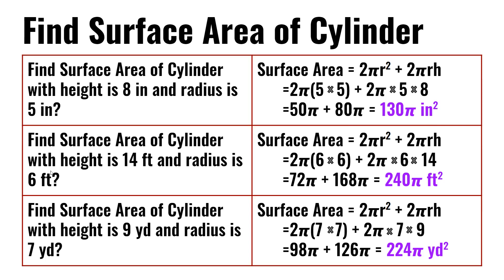Find the surface area of a cylinder with height 14 feet and radius 6 feet. 2π(6×6) + 2π×6×14. 6×6 is 36; 36 times 2π is 72π. 2π×6×14 is 168π. 72π plus 168π is equal to 240π feet squared.